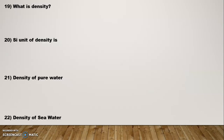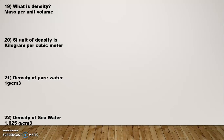Question Number 19: What is density? Answer: Mass per unit volume is called density. Question Number 20: What is the SI unit of density? That is kilogram per cubic meter (kg/m³). Question Number 21: What is the density of pure water? That is 1 gram per cm³. Question Number 22: What is the density of sea water? That is 1.025 gram per cm³.